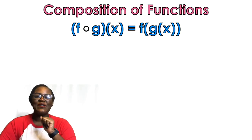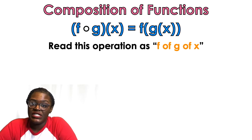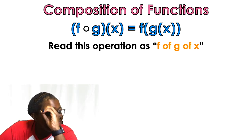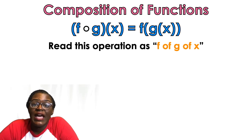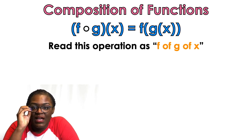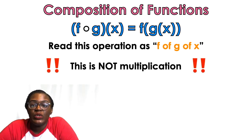We are doing composition of functions. If you missed addition, subtraction, multiplication, and division, there's another video on that. The notation you need to use has a little open circle in the middle — that means composition. If it's a closed circle, that means multiplication. That open circle definitely means composition, not multiplication.